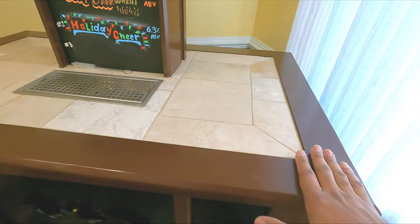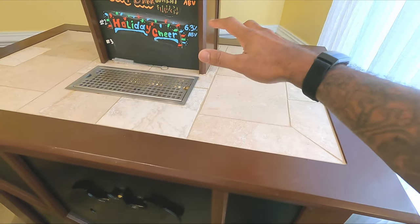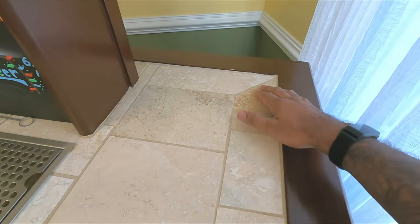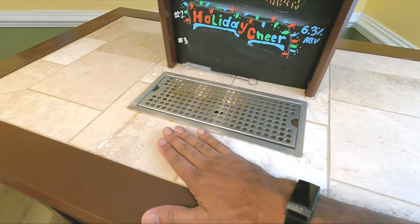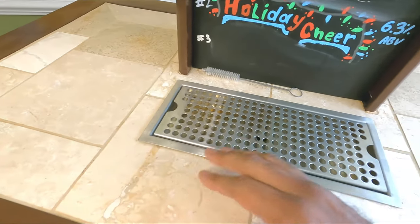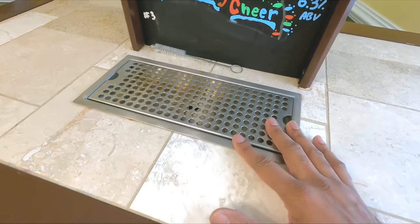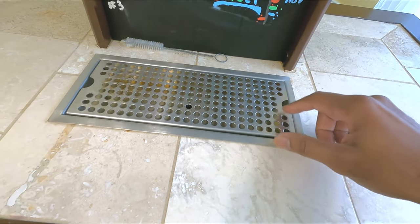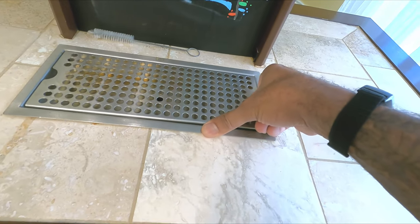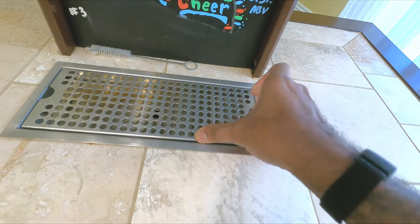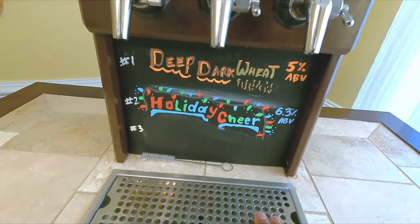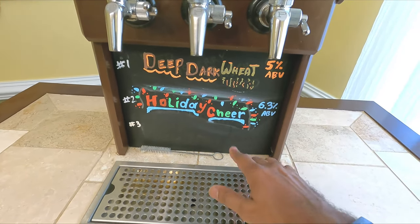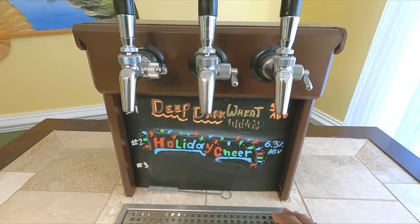To talk through what I've got going on the top here, this is some travertine tile that I've cut in just a cool pattern, because it looks nice, and I had some extra from a previous project. This is the drip pan that you see the line run down to. This piece, this middle piece does come out. It's sticking right now because I need to clean it, but this does come out. Chalkboard backing so that I can put the beers that I have on tap there.